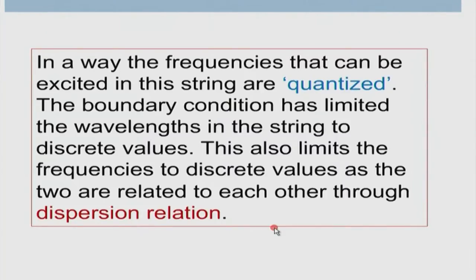The dispersion relation is the relationship between frequency and wavelength, or equivalently between energy and wavelength, depending on the type of system. We will see later that this could also be treated as a relationship between energy and wavelength. Different systems have different dispersion relations — wave excitations in a solid can be of various types, each with its own dispersion relation. Not everything has a simple dispersion relation, as we will see even in the case of quantum particles.